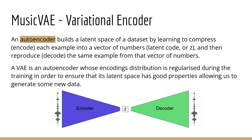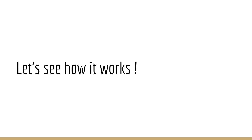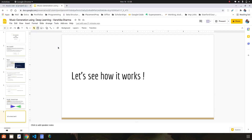In VAE, the autoencoder focuses on encoding a distribution. The distribution is regularized so that we can have good properties in our latent space to generate new data out of it. So let's see how my project works.